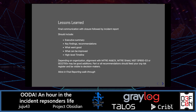Finally, the lesson learned. You should have a final communication to close an incident, which should either include or be followed by an incident report. This should include an executive summary, key findings with recommendations, what went well, what can be improved, and a high-level timeline. Depending on your organization, alignment with MITRE ATT&CK, MITRE Shield, NIST SP 853, or ISO 27000 may be good additions. All recommendations should feed your organization's risk register and be visible to decision makers and executives. Don't waste an incident — each one is an opportunity for improvement. If you don't use it, you leave the door open to an attacker — the same one or another.